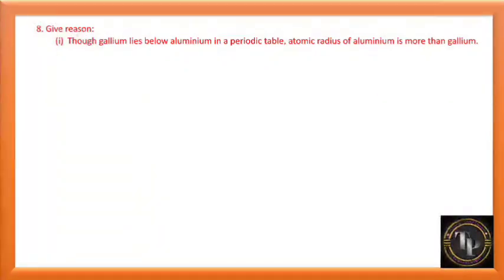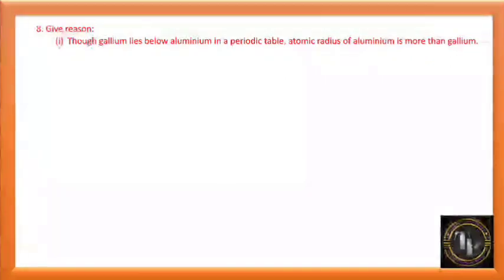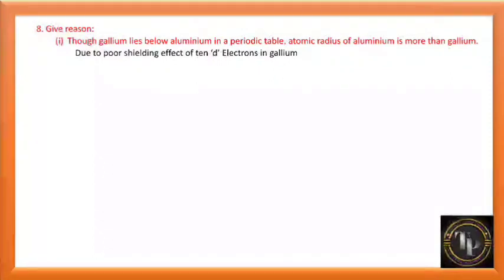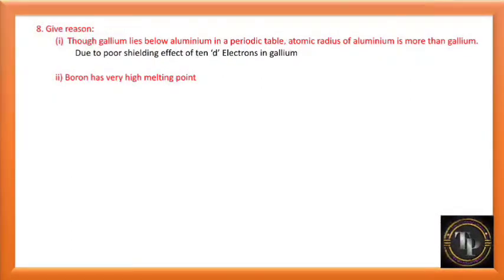Give a reason: though gallium lies below aluminium in the periodic table, the atomic radius of aluminium is more than gallium. According to the trend, as we move from top to bottom in the periodic table radius should increase, but aluminium has a larger radius than gallium. This is because of the poor shielding effect of 10d electrons in gallium.